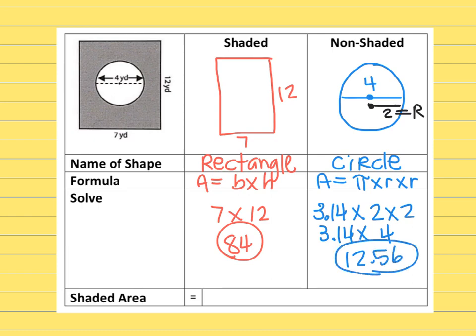Then to find my final answer, the area of the big rectangle was 84. Then a cutout area of non-shaded space was 12.56, which then leaves me with 71.44, and that was in yards. 71.44 square yards for the final answer.